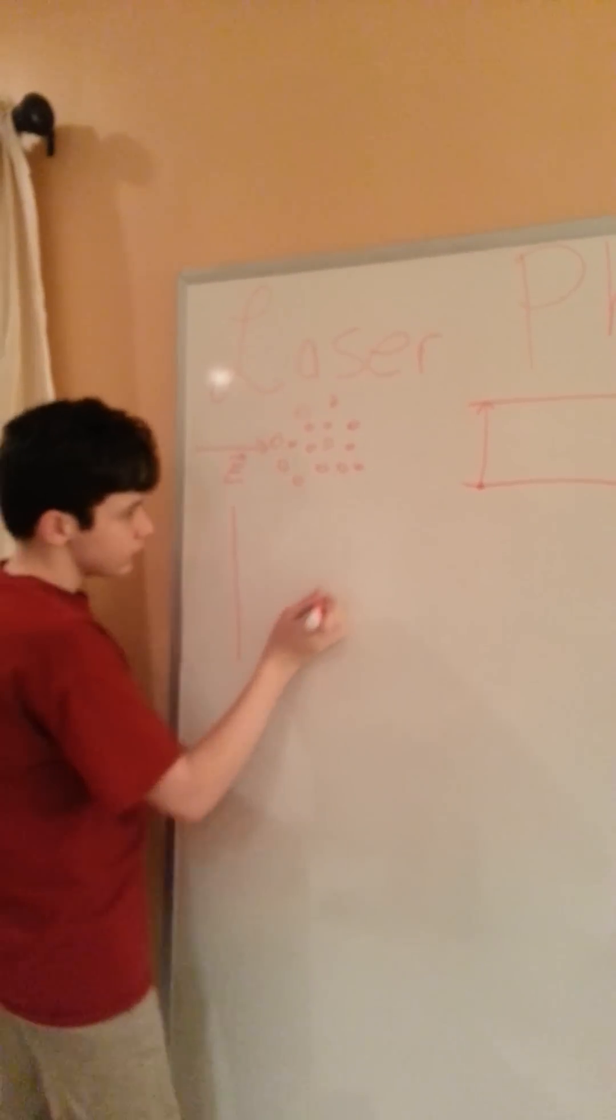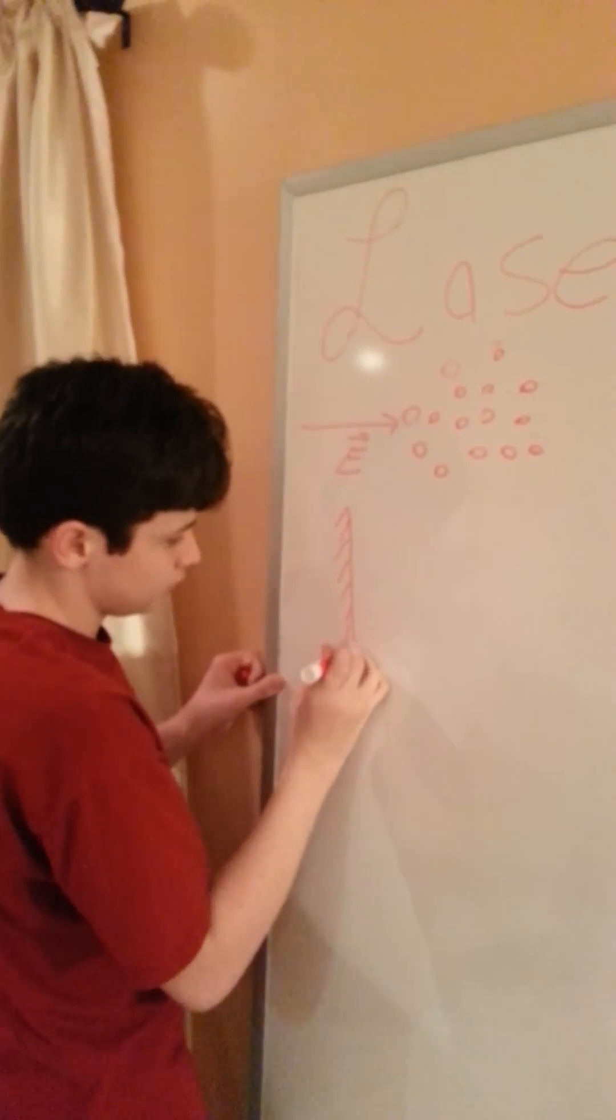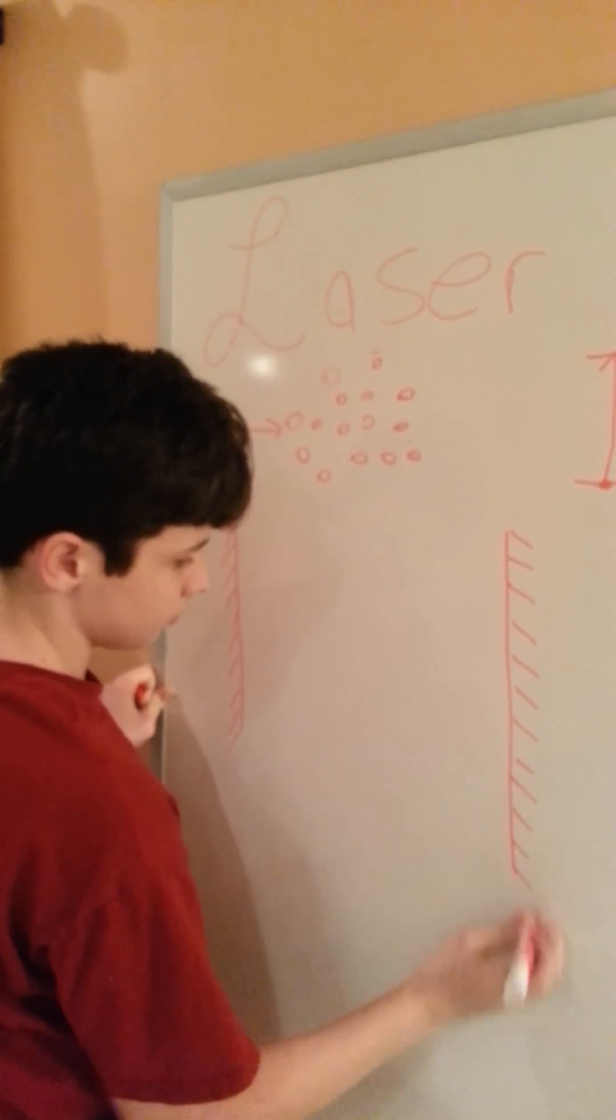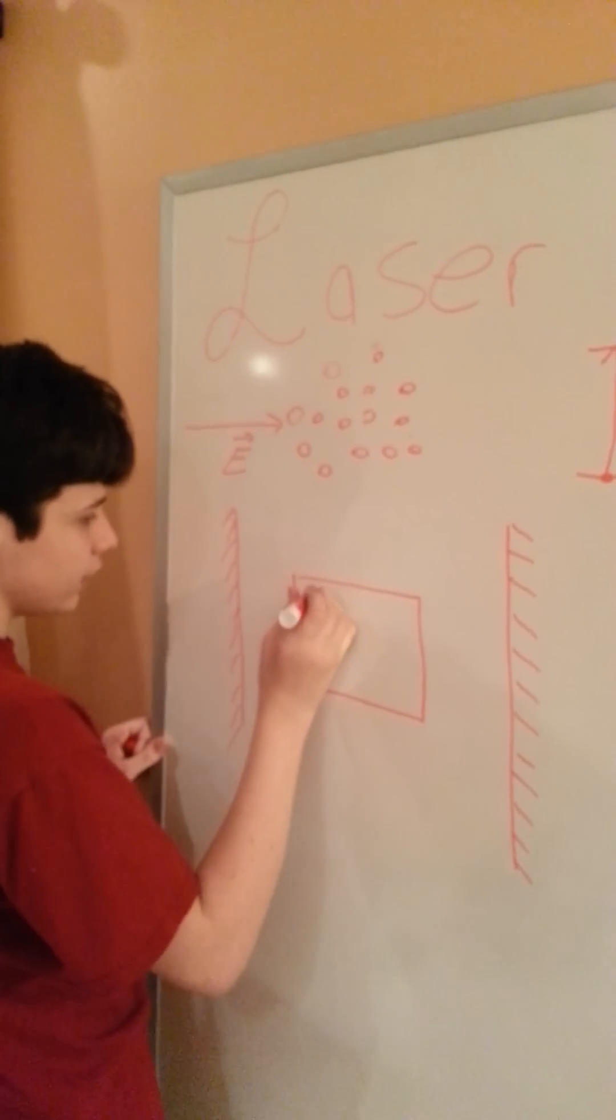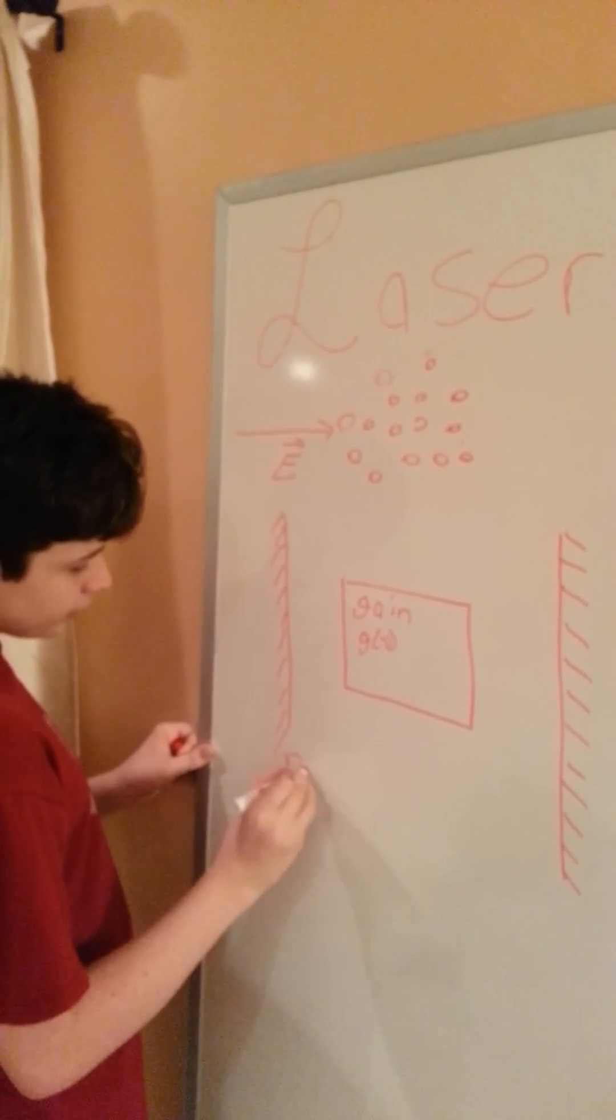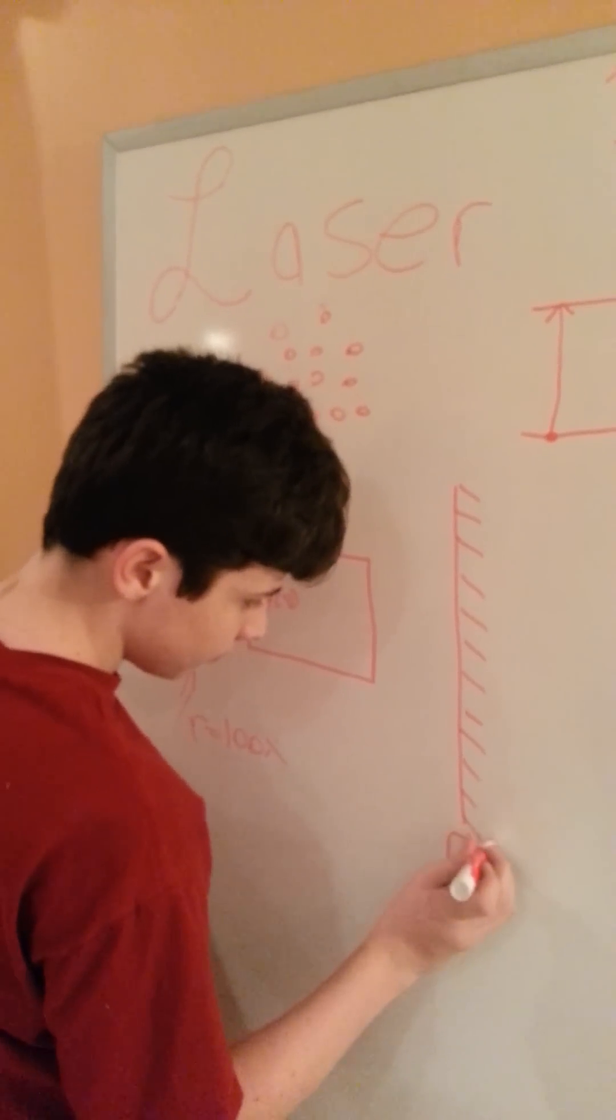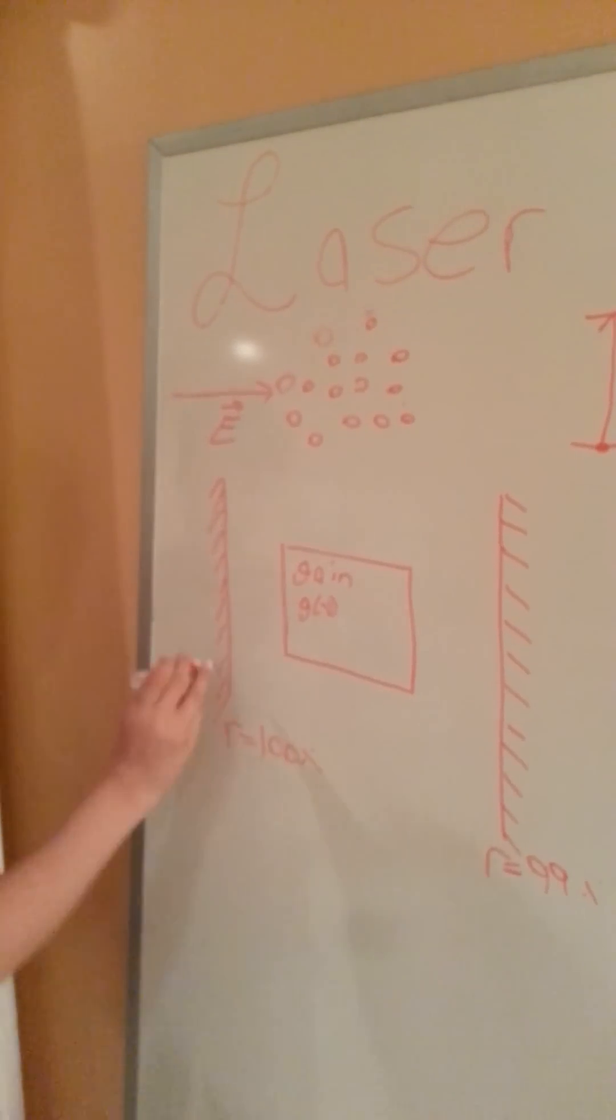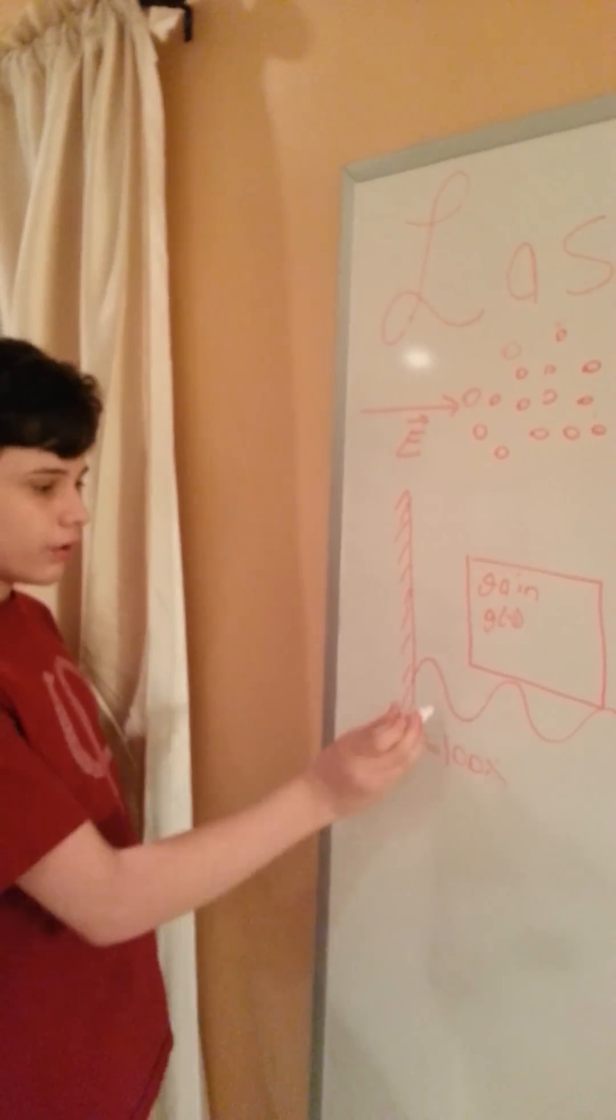To make this more official, I can have two mirrors. This thing will have perfect reflectivity, and this thing will have 99% reflectivity. Basically, this acts sort of like a cavity. It will hold a frequency of light.